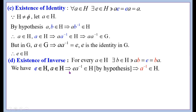Therefore by hypothesis, e·a⁻¹ = a⁻¹ (since e is the identity element), and hence a ∈ H implies a⁻¹ ∈ H. Since a is an arbitrary element in H, we say that the existence of inverse is true for every element of H — that is, inverse exists for each and every element in H.